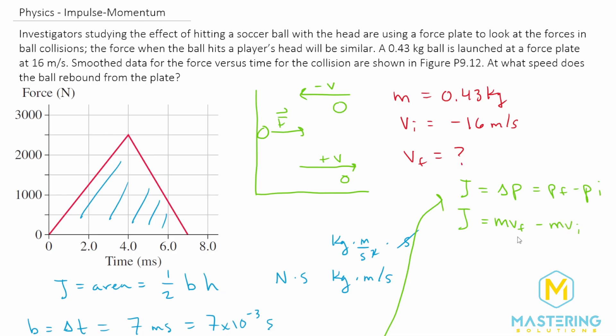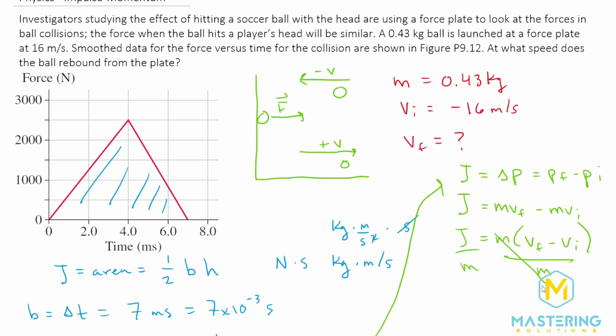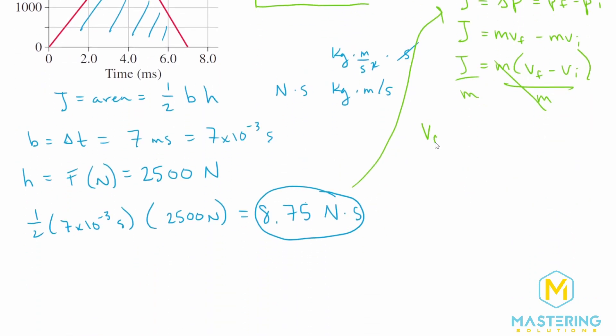We want to solve for the final velocity. So let's factor out the mass. Mass times final velocity minus initial velocity. And we're going to divide both sides of the equation by m. So v final minus v initial is equal to J over m.